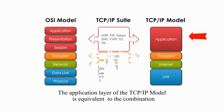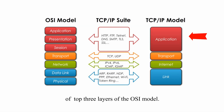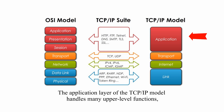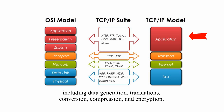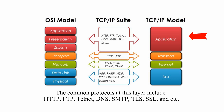The application layer of the TCP/IP model is equivalent to the combination of the top three layers of the OSI model. It handles many upper-level functions, including data generation, translation, conversion, compression, and encryption. It also handles session establishment, maintenance, and termination. Common protocols at this layer include HTTP, FTP, TELNET, DNS, SMTP, TLS, SSL, and more.